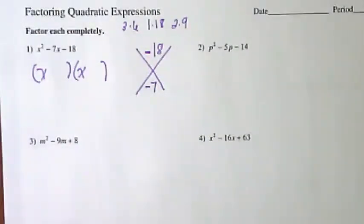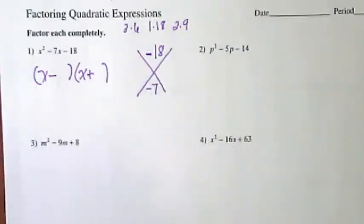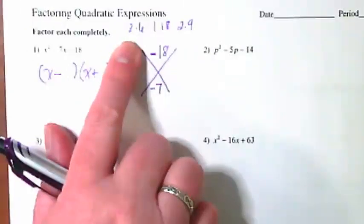Now I'm noticing when I multiply them I'm getting a negative 18. That means one of these numbers has to be positive and the other has to be negative, because I only get a negative when I multiply a positive and a negative. Right? So one of these has to be negative and one of these has to be positive.